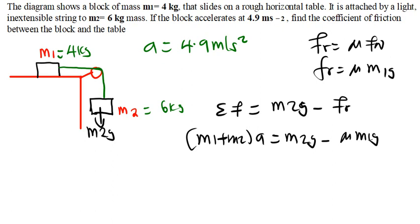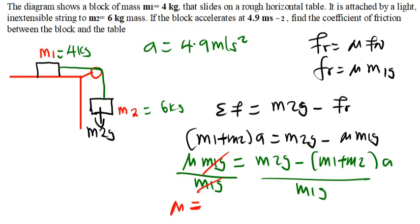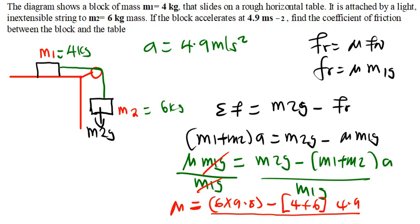My goal is to find mu, so I'll rearrange. Shifting terms, I get: mu times M1 times G equals M2 times G minus (M1 plus M2) times acceleration. Dividing both sides by M1 times G, I can isolate mu. Substituting values: M2 is 6, G is 9.8, M1 is 4, M2 is 6, and acceleration is 4.9, all divided by M1 times G which is 4 times 9.8.